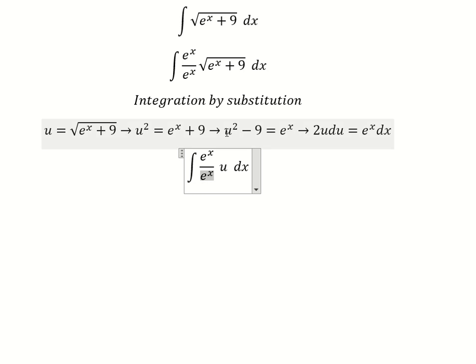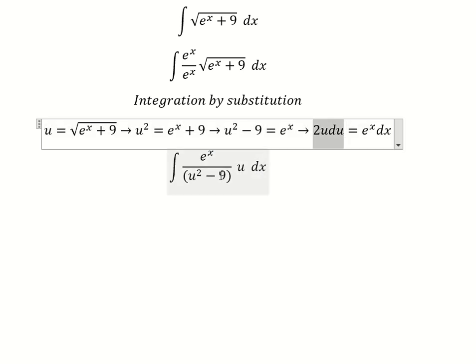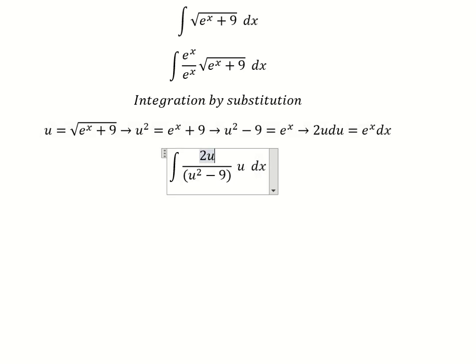We make these substitutions. The x term becomes this expression. So u times u gives us u squared.